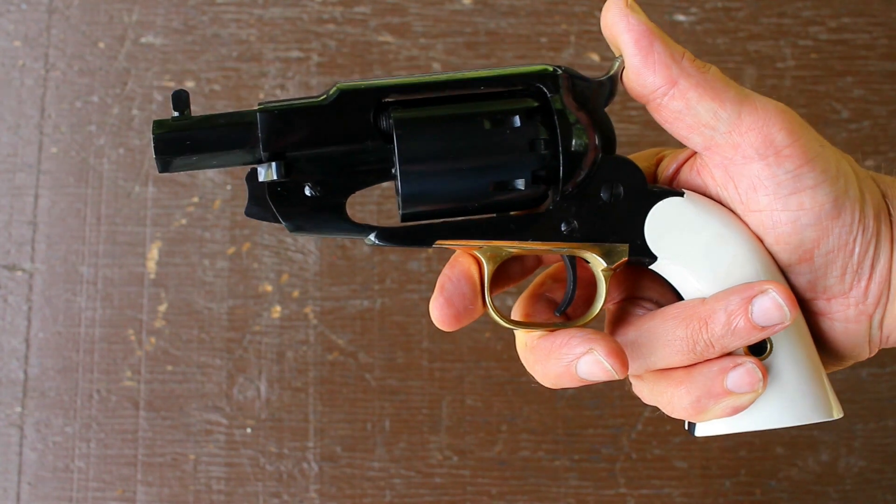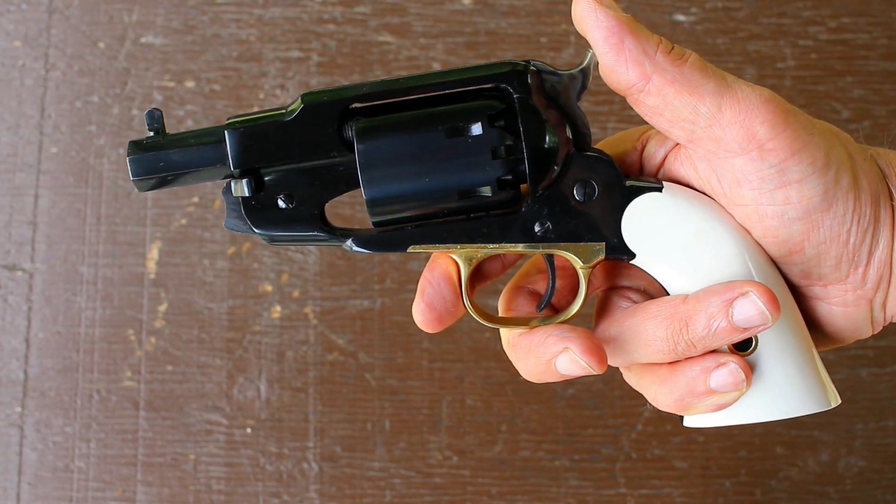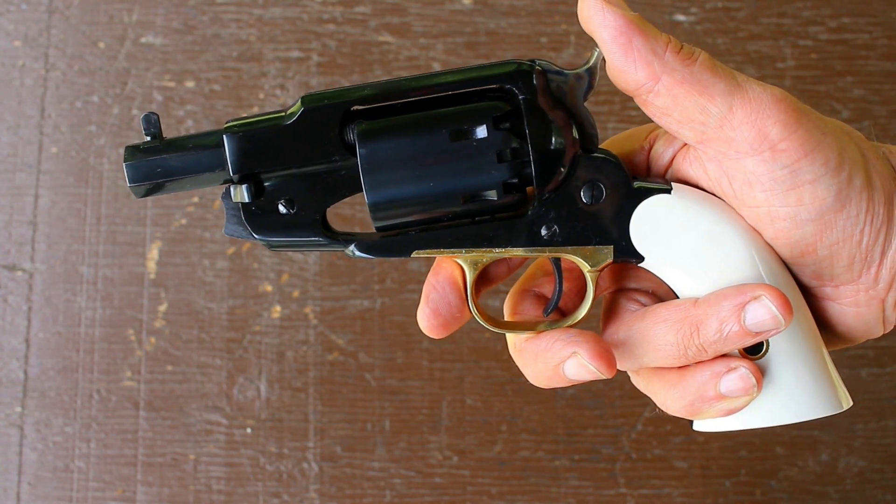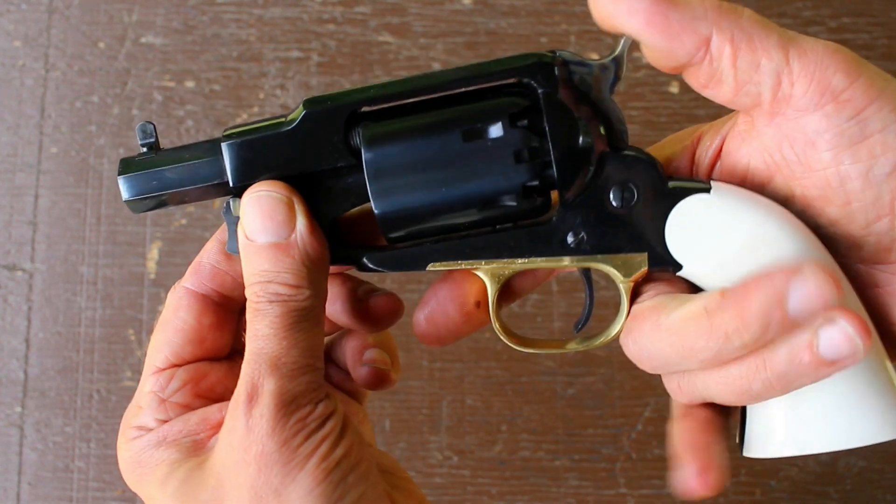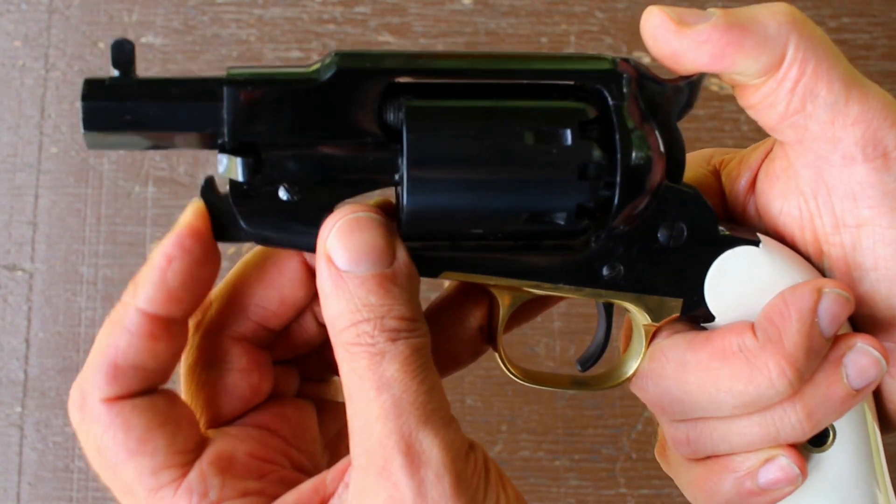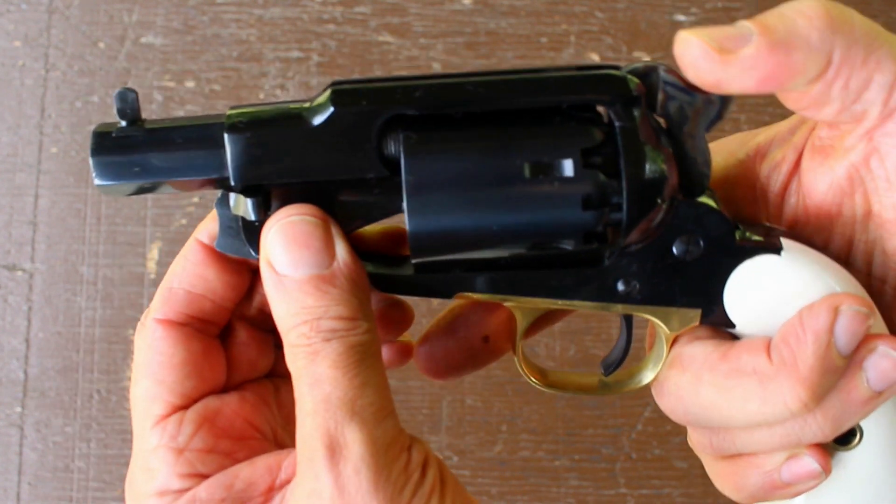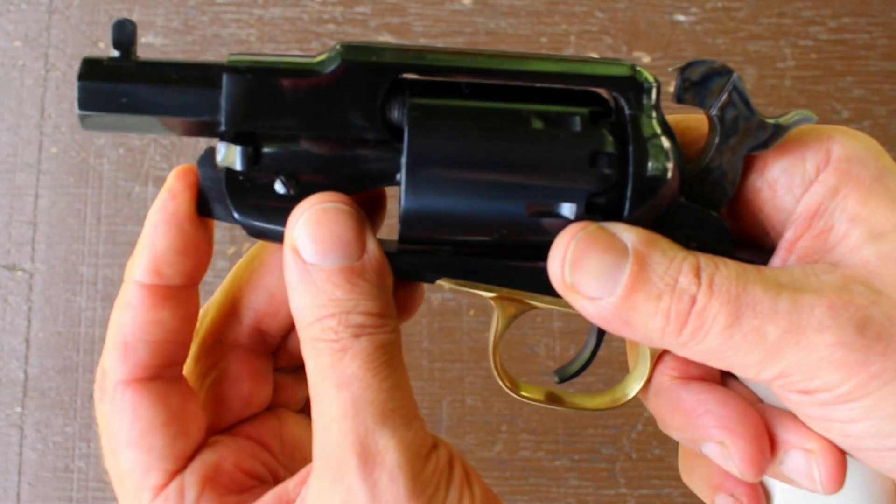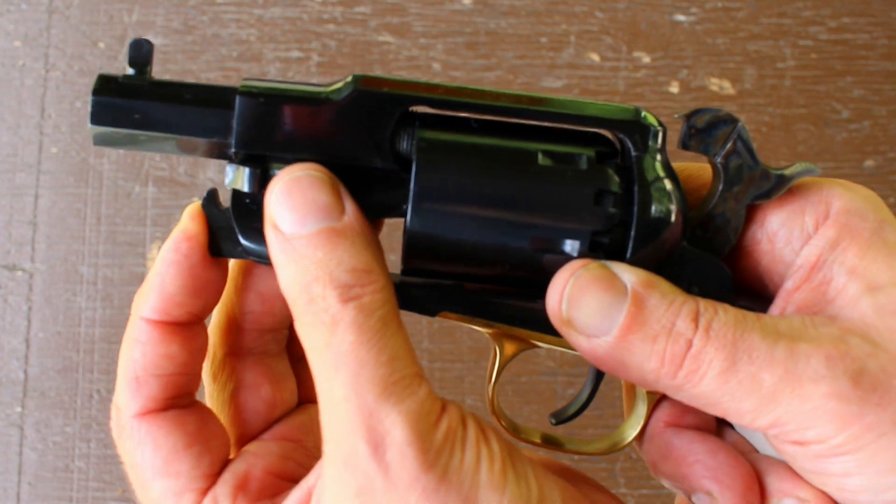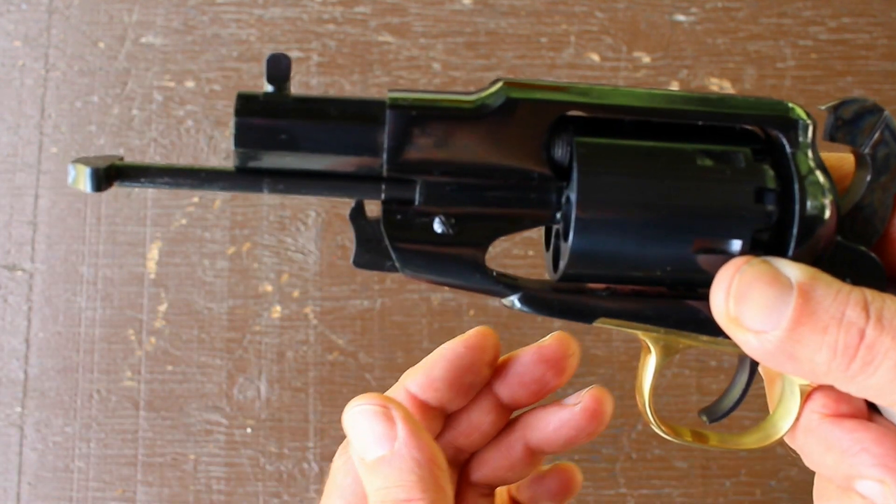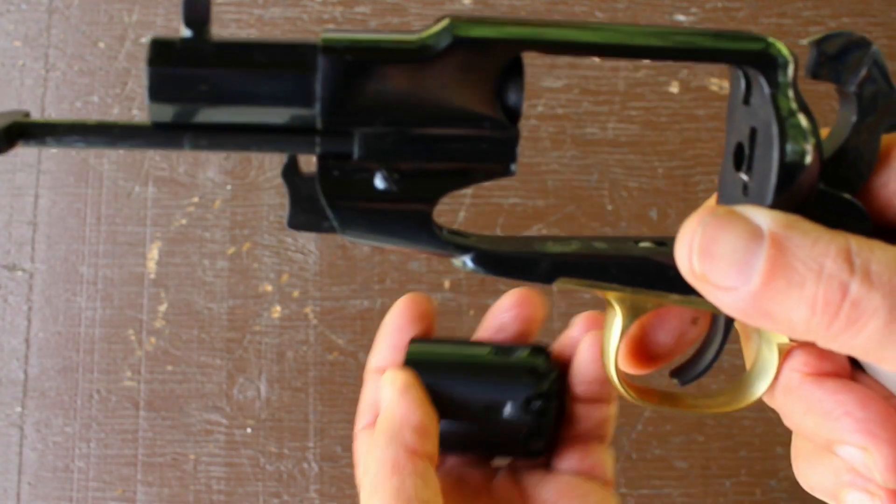So because of the short 3-inch barrel, there's really no way to accommodate a loading lever on this. So in order to retain the cylinder pin, what Pieda has done is given it this spring-loaded retainer. So all I have to do is move that out of the way, pull out the base pin, and the cylinder will be removed.